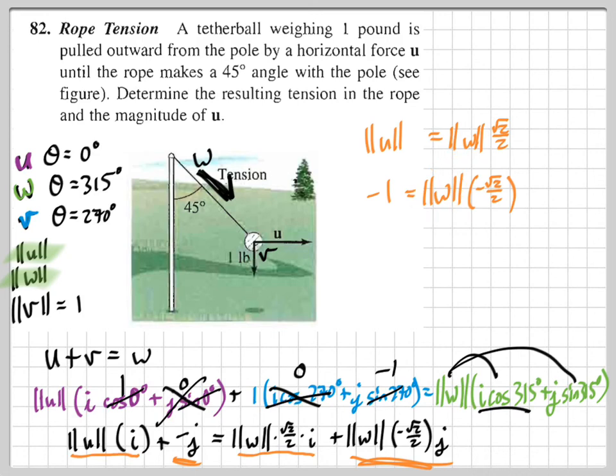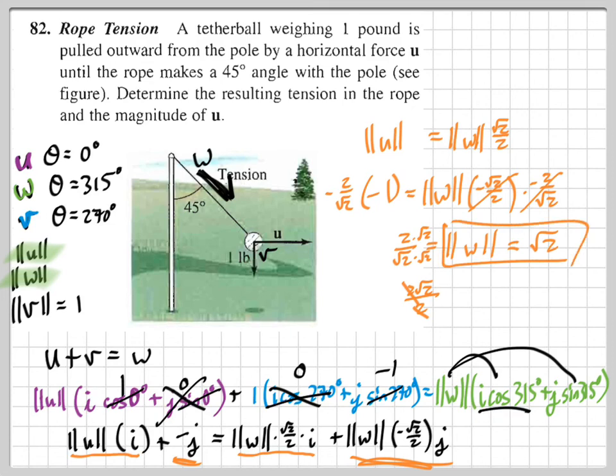We can solve for this guy right here. So I'm going to multiply both sides by negative 2 over √2. That would make this into a 1. Then the other side, I multiply the negative 1 times negative 2 over √2, that would be 2 over √2. Simplify that because we can't have a radical on the bottom. So we multiply by √2 over √2, that's going to be 2√2 over 2. These would cancel out. It looks like the magnitude of W is √2.